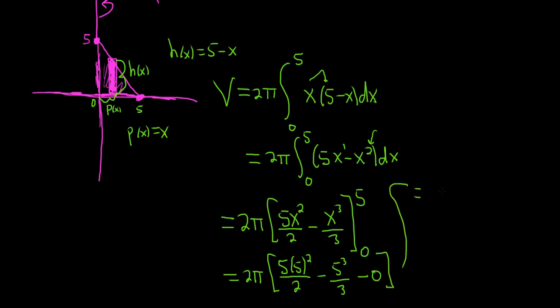So this is equal to 2 pi. So this is 5 cubed. 5 cubed is 125, so we get 125 over 2 minus 125 over 3. So this is 2 pi.